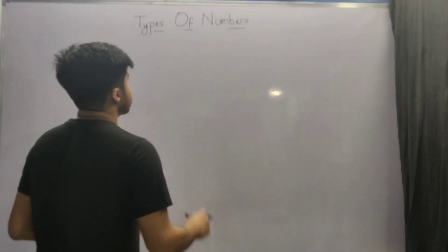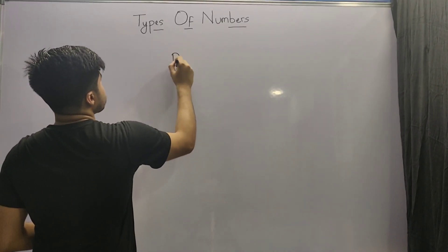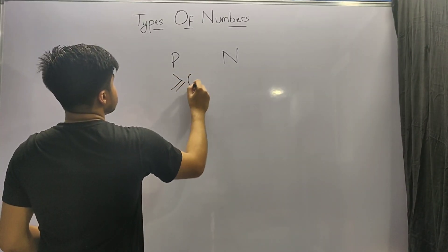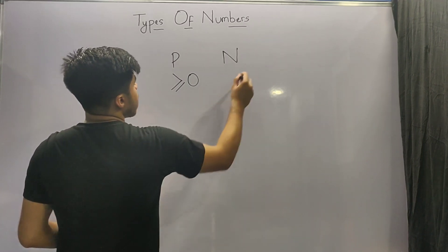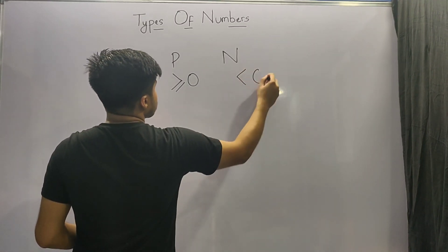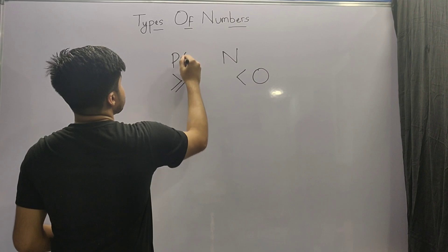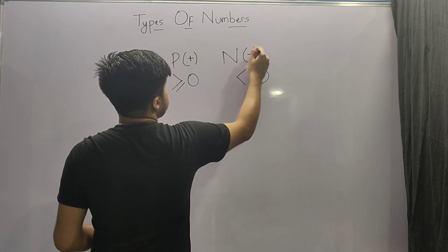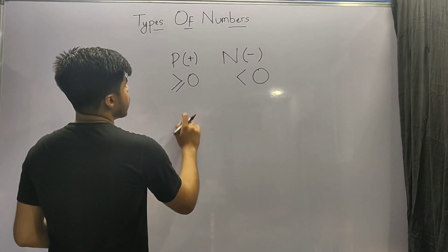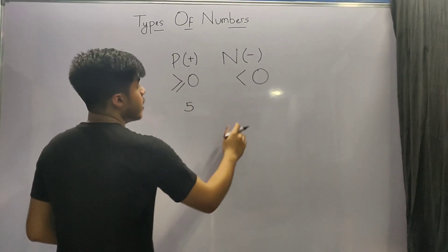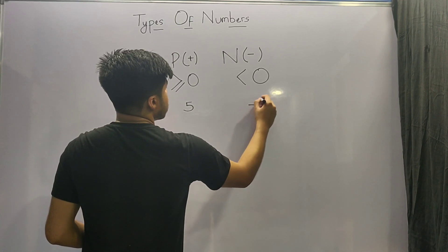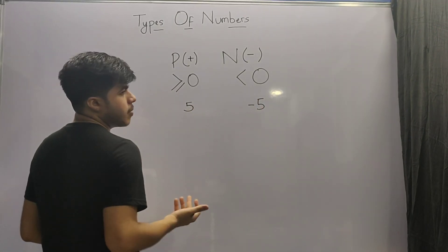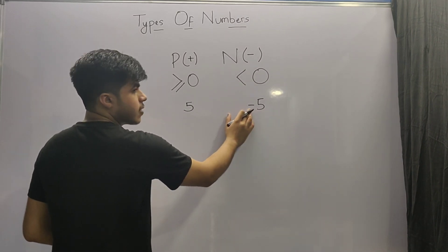Our first classification is between positive and negative numbers. The numbers which are greater than or equal to zero are known as positive numbers, and the numbers which are less than zero are known as negative numbers. The symbol of the positive number is the plus sign and the symbol for the negative number is the minus sign. For example, 5 is a positive number and minus 5 is a negative number. You will notice that before the positive number, we have not applied any symbol, but before the negative number, we have applied the minus sign.